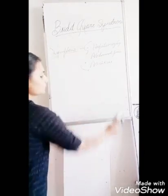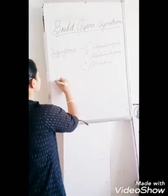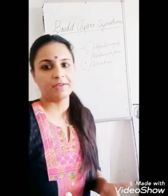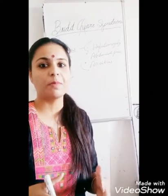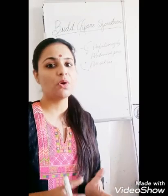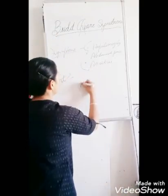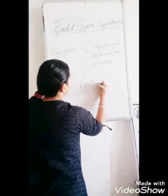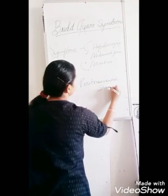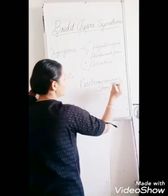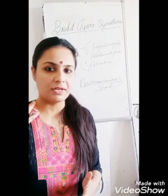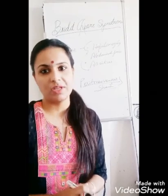In treatment, because there is ascites — accumulation of fluid in the abdomen — we will drain the fluid by peritoneovenous shunt. We drain the ascitic fluid into the vein of the neck, like the internal jugular vein.